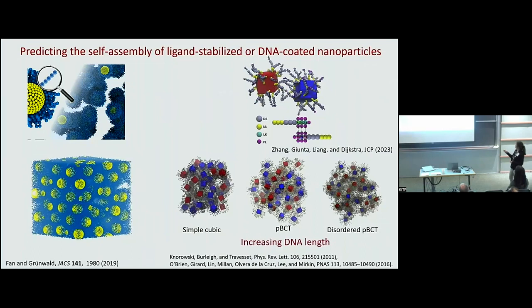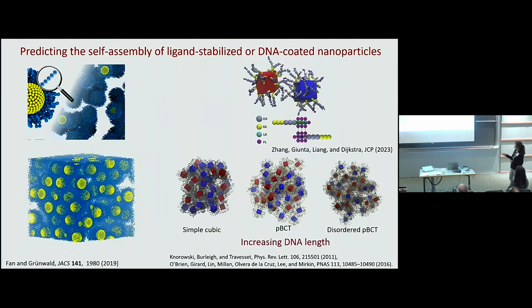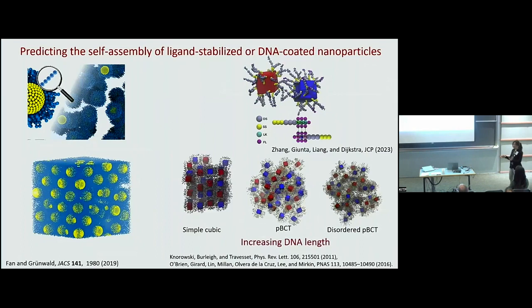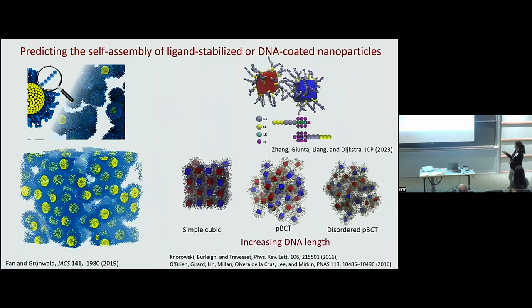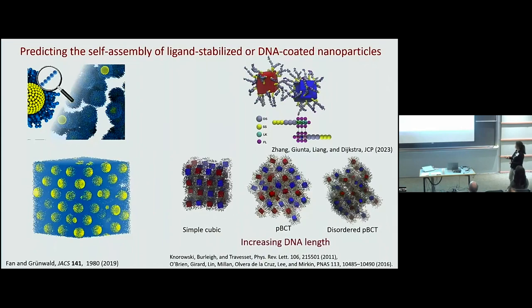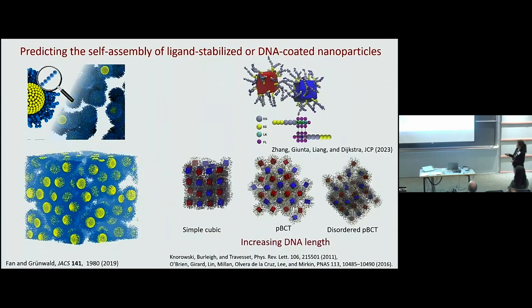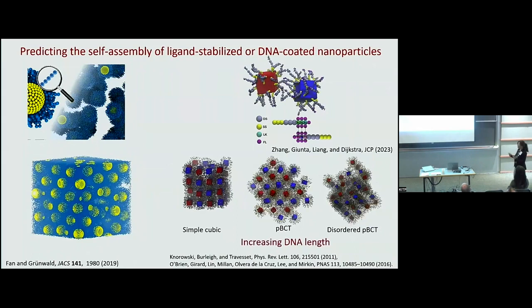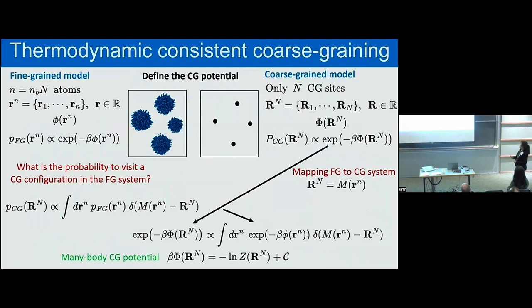We also looked at DNA-coated colloids, drawing inspiration from Alex and Monica. What is very nice nowadays is that you can put all these particles in a simulation box and let them self-assemble without having to put the particles at a well-educated guess for the lattice structure. They really self-assemble into simple cubic, plastic BCC, and compositionally disordered plastic BCC structures. However, these simulations are still extremely slow. That's also the reason why we are working on ways to coarse-grain these systems.